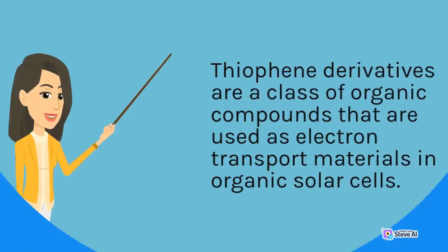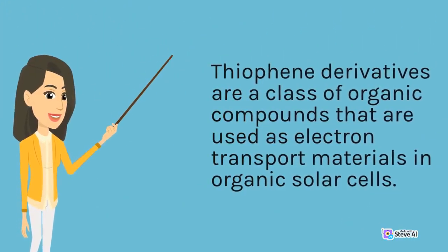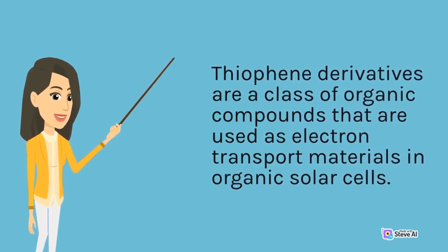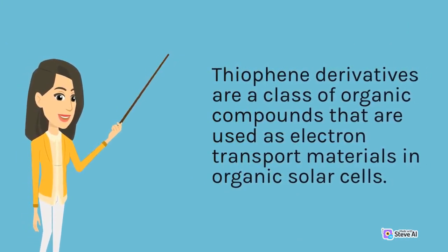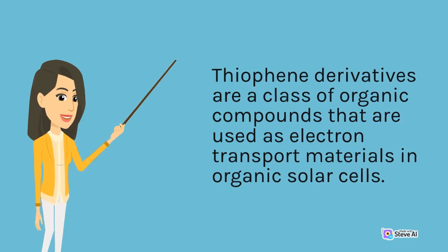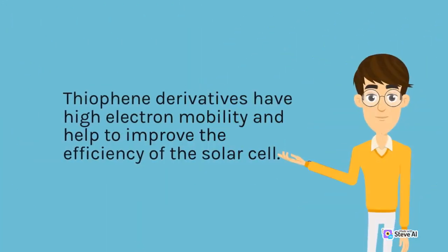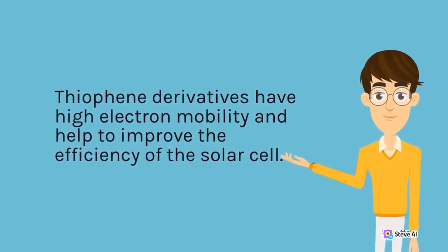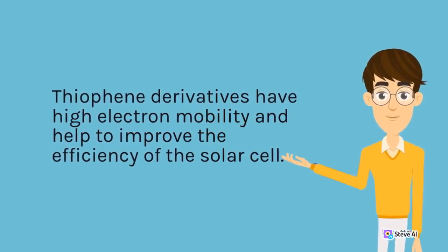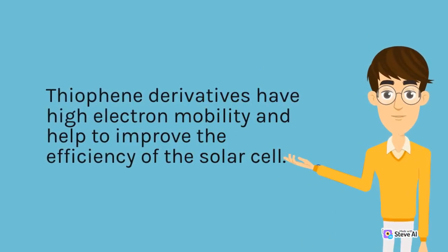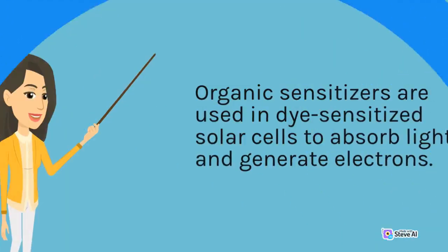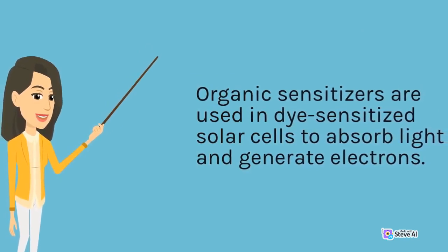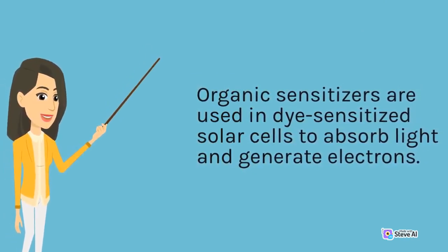Thiophene derivatives are a class of organic compounds that are used as electron transport materials in organic solar cells. They have high electron mobility and help to improve the efficiency of the solar cell. Organic sensitizers are used in dye-sensitized solar cells to absorb light and generate electrons.